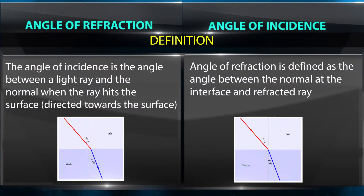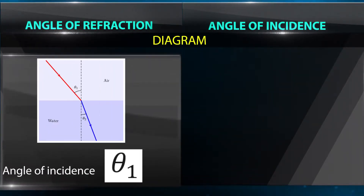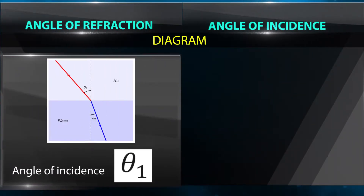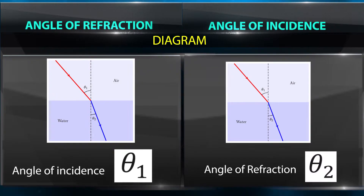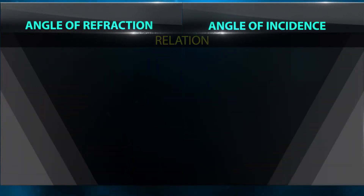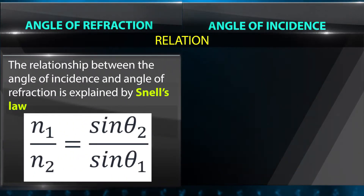In the diagram, the angle of incidence is labeled theta 1 and the angle of refraction is labeled theta 2. The relationship between the angle of incidence and the angle of refraction is explained by Snell's Law.